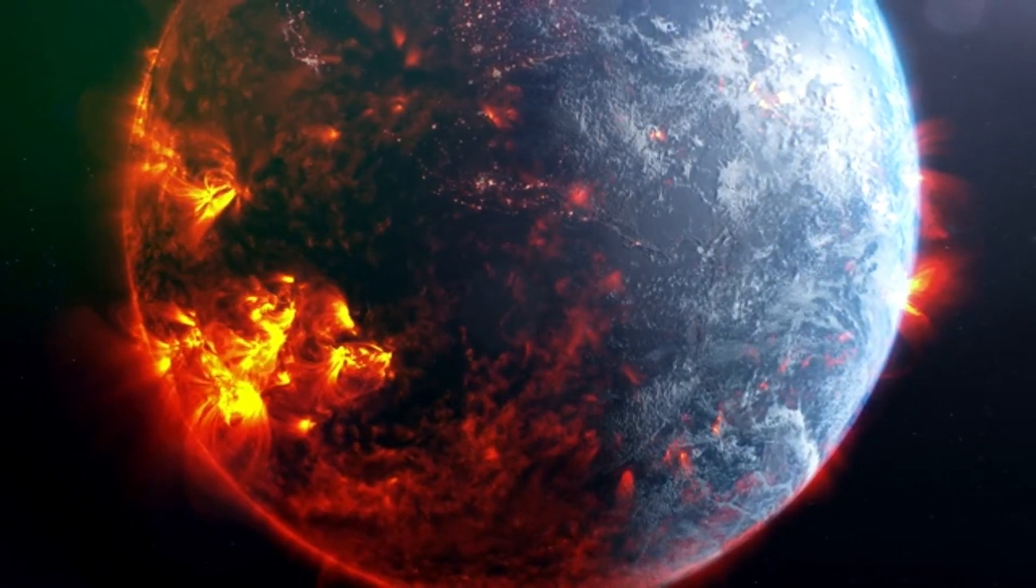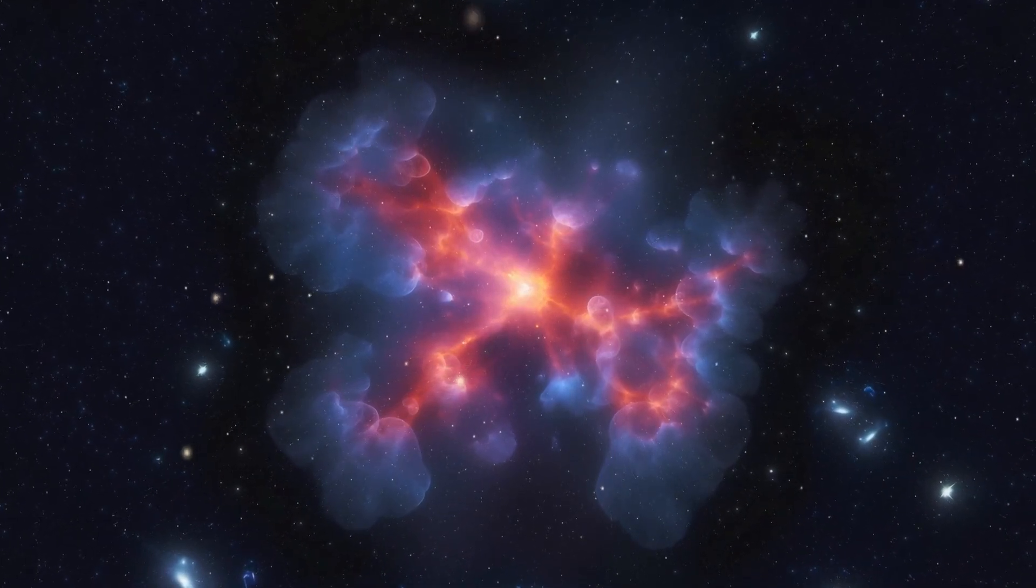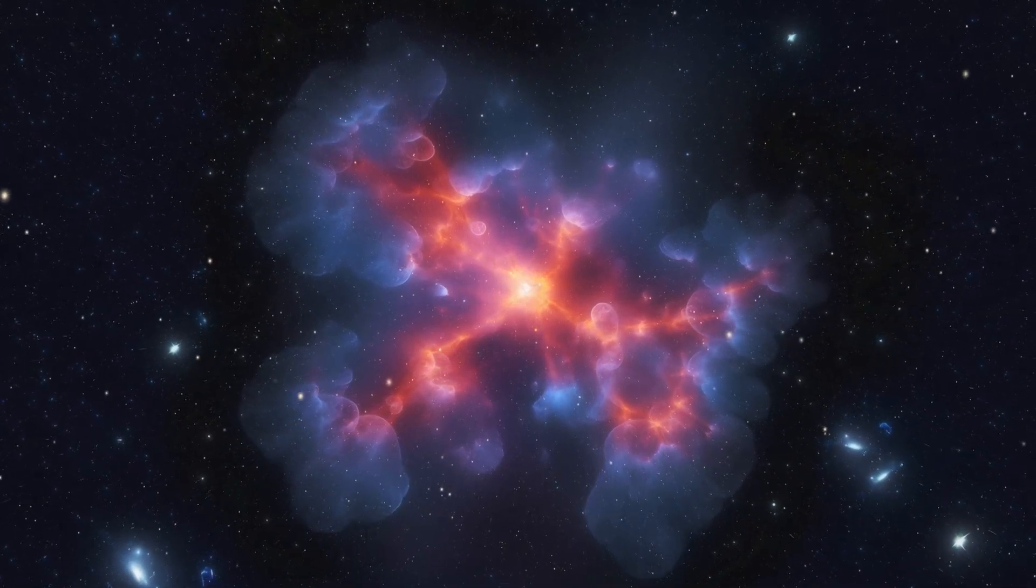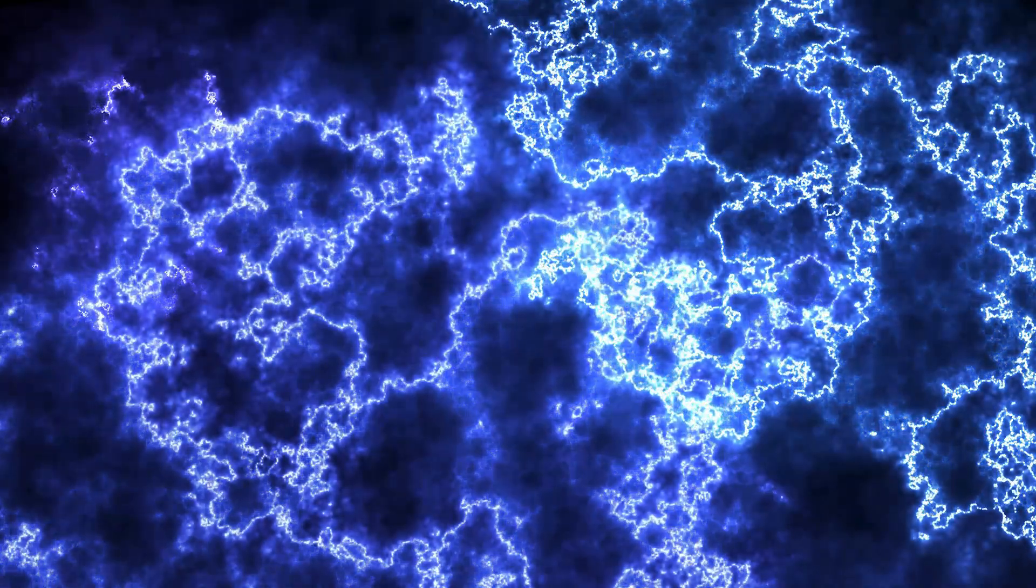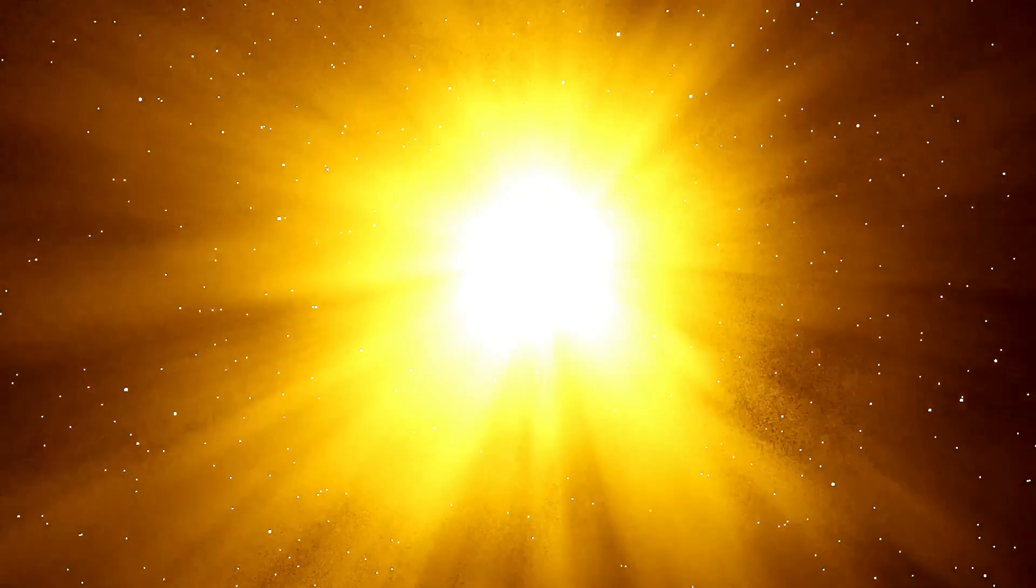As you're going to find, the Sun's magnetic field is created by the movement of electrically charged gases in its interior, a process known as the solar dynamo. Over the long haul, this magnetic field becomes progressively intricate and twisted due to the Sun's rotation and convective motions. Eventually, this process leads to a total inversion of the magnetic polarity.